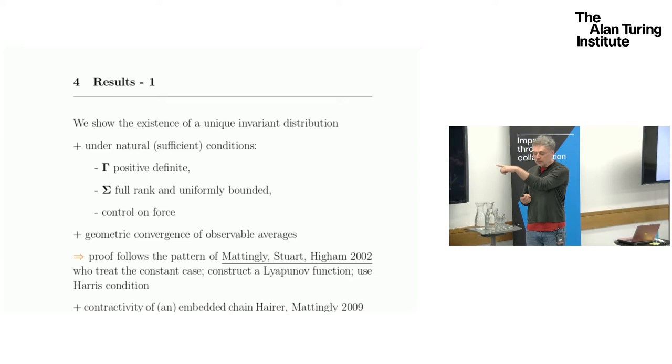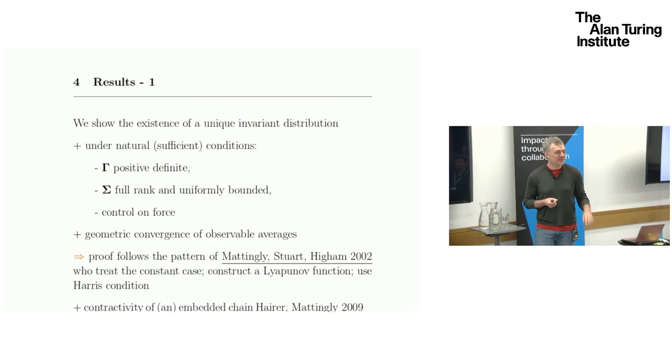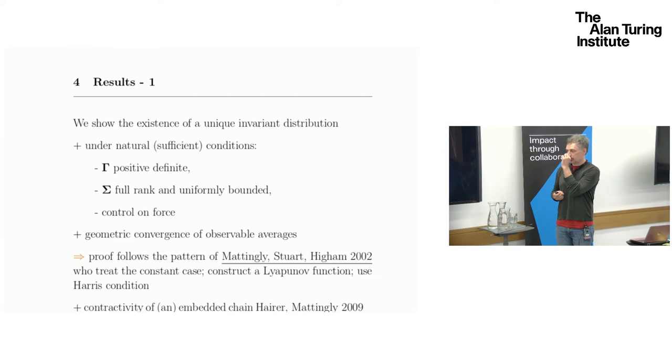Under those sufficient conditions, we derive geometric convergence of a certain class of observables. The proof follows the paper by Jonathan Stuart and Higham. Essentially, they treat the constant case, whereas nothing is position-dependent. But actually, the proof techniques that they use kind of imply the results I'm going to present here.